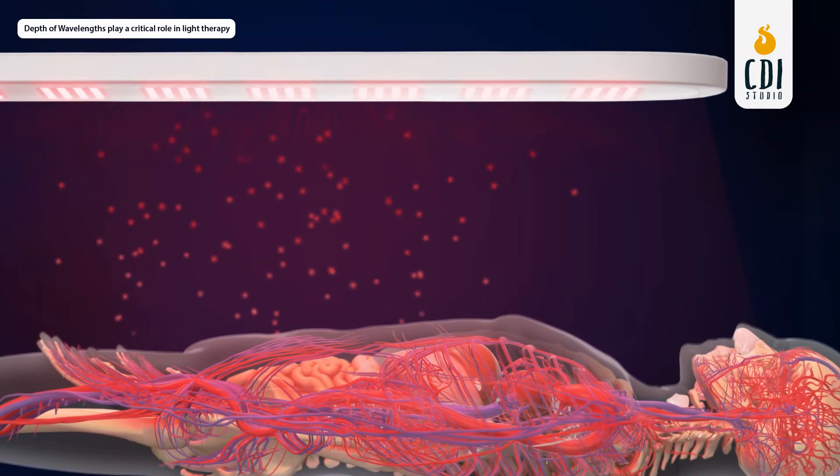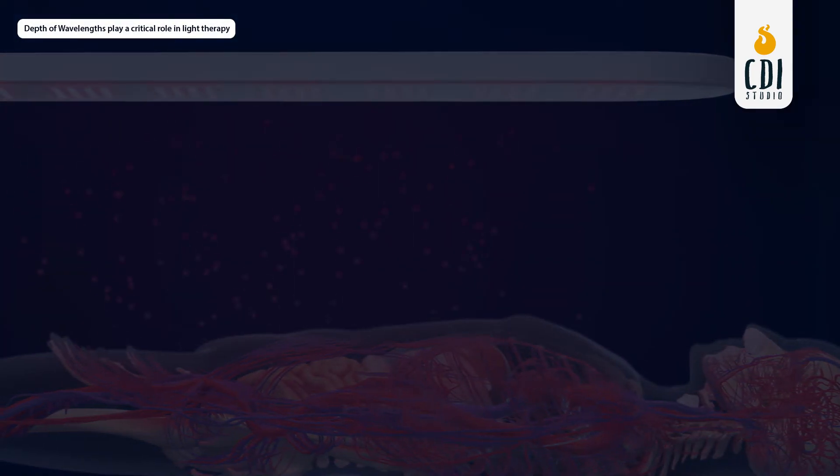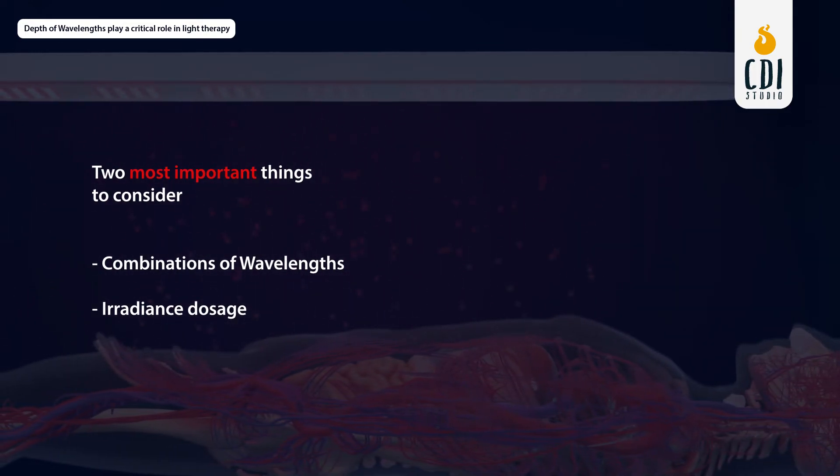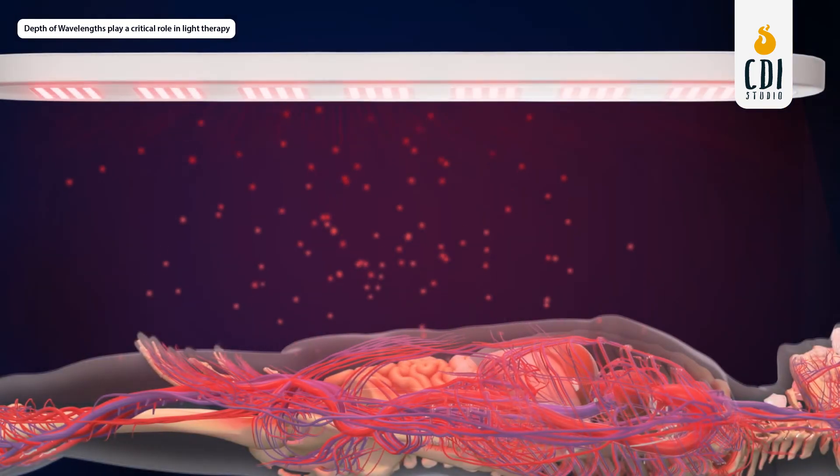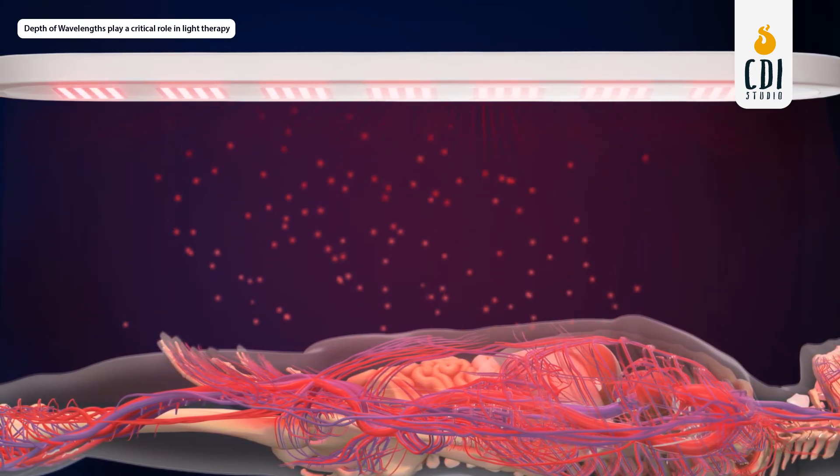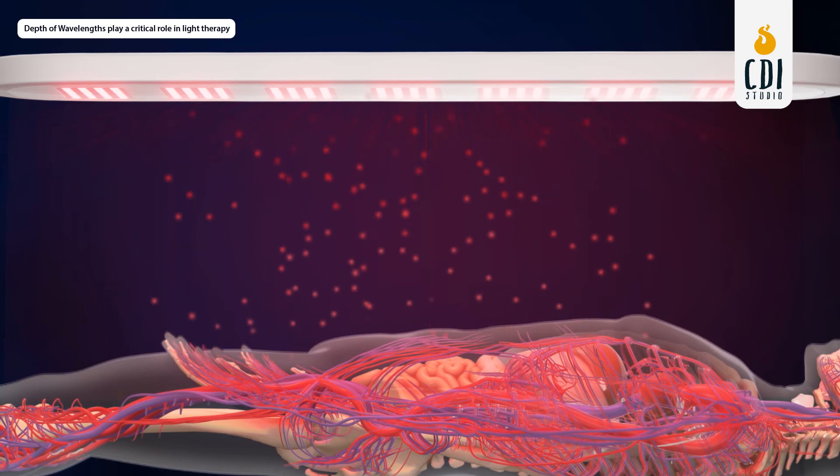Therefore, when seeking a light therapy product to purchase, the two most important things to consider are combinations of wavelengths being used and irradiance dosage. This represents the amount of energy a specific part of your body receives over a set period while using the device. Think of it as the rate of energy delivered.